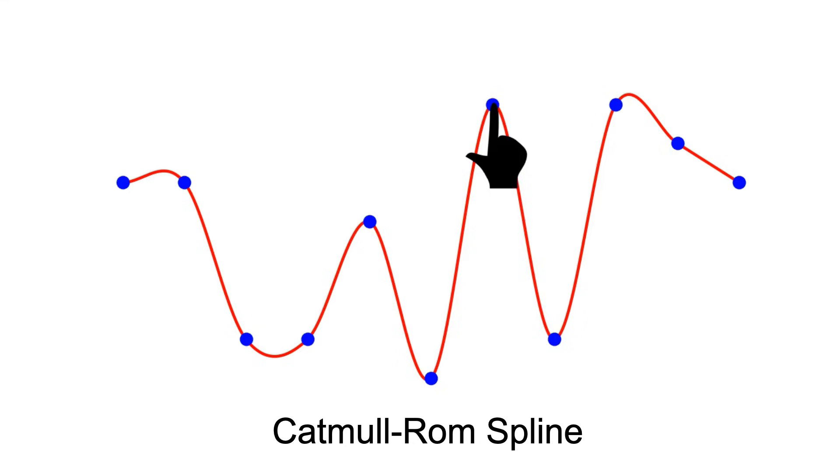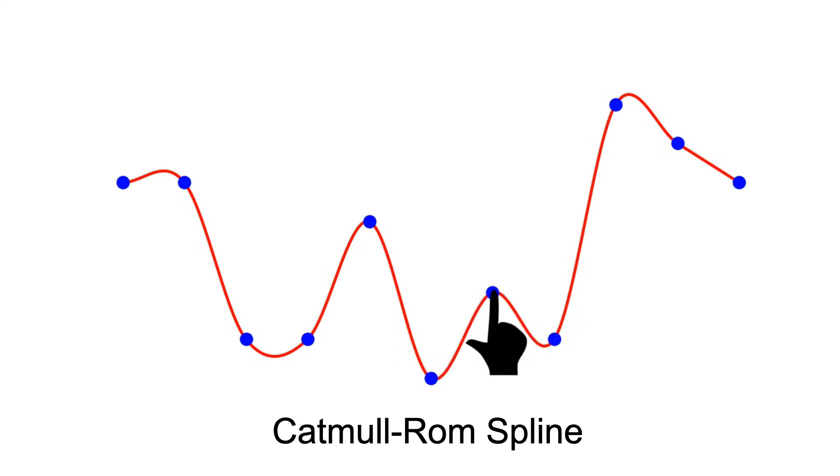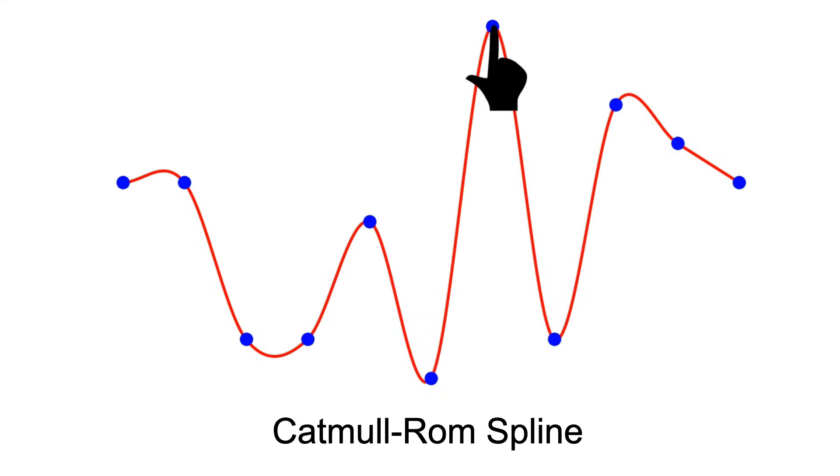Whereas for Catmull-Rom, most of the spline remains fixed. This is called local control, and it's a very useful feature.